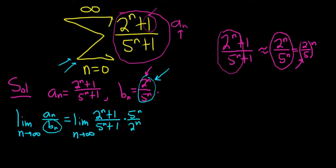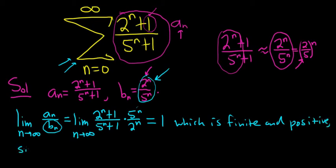And now you see it's pretty clear that this limit is going to be 1, right? Because when n is big, you can ignore the ones. And it's kind of like we get 5 to the n over 5 to the n, 2 to the n over 2 to the n. So the limit is just going to be 1, which is finite and positive. So the limit comparison test applies.